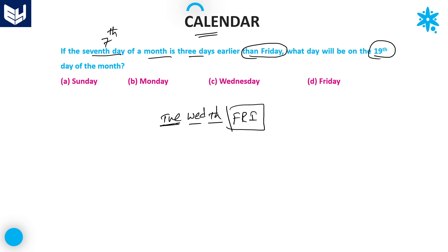Some people get confused here — whether to leave three days and take Monday, or take Tuesday. Three days earlier than Friday: one day earlier is Thursday, two days earlier is Wednesday, three days earlier is Tuesday. So the seventh day of the month is Tuesday.